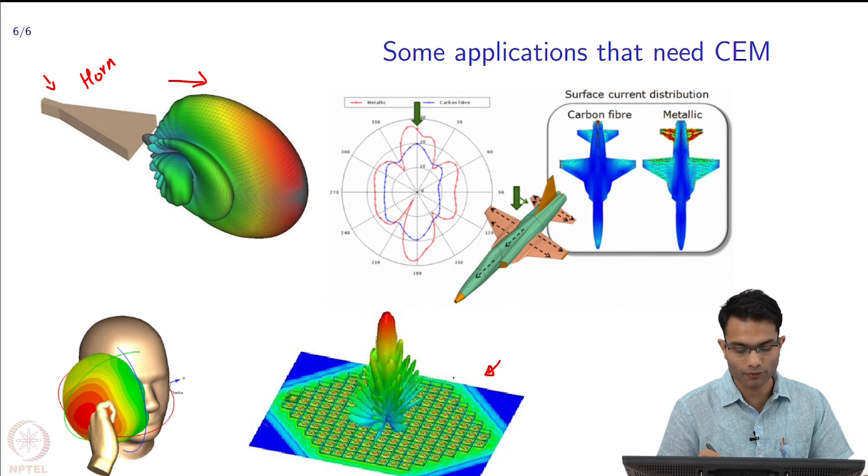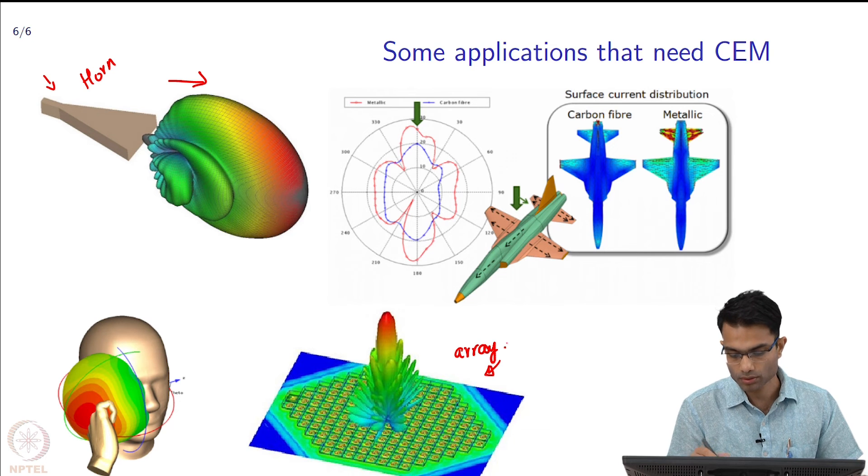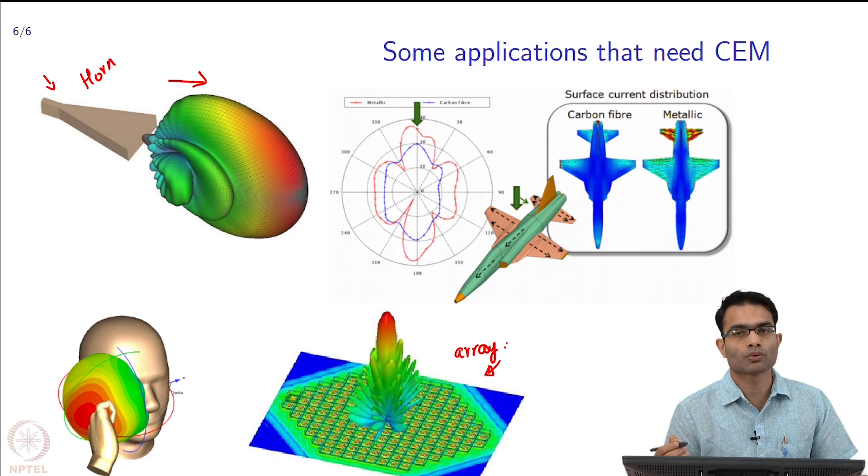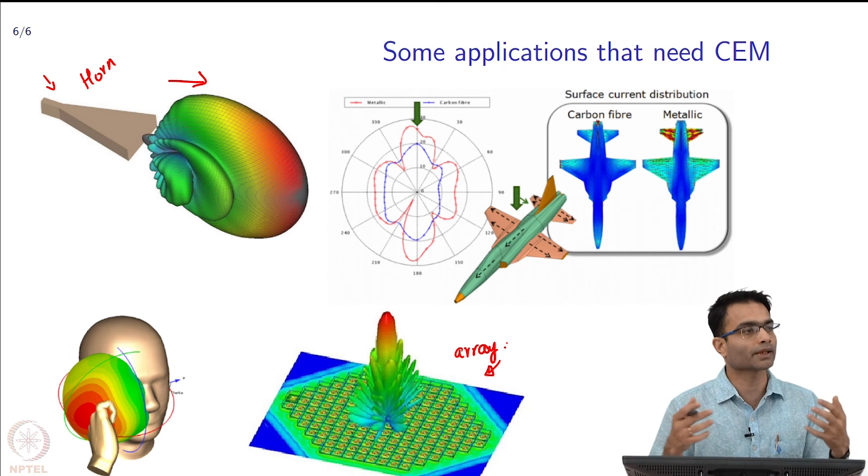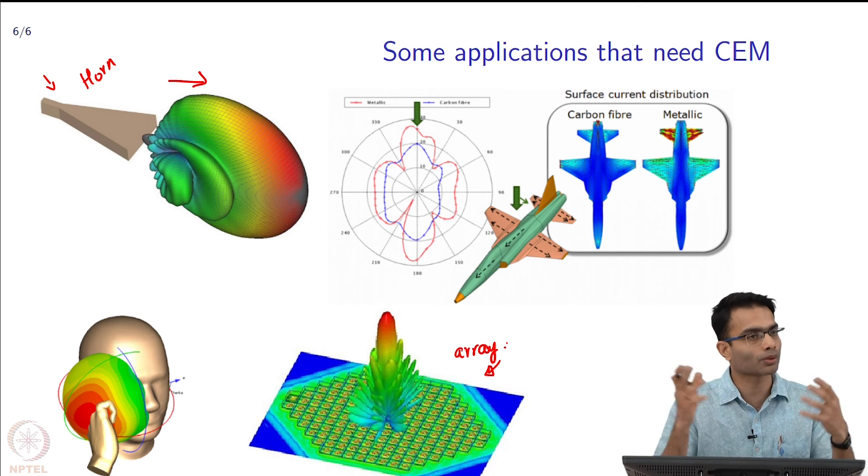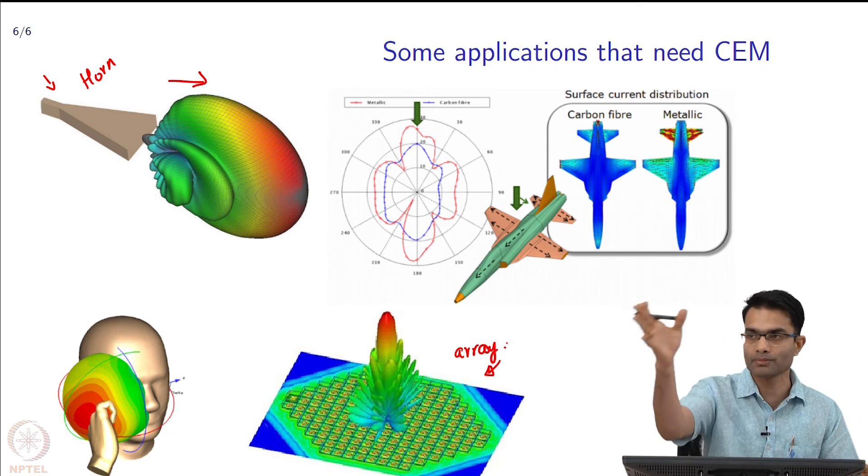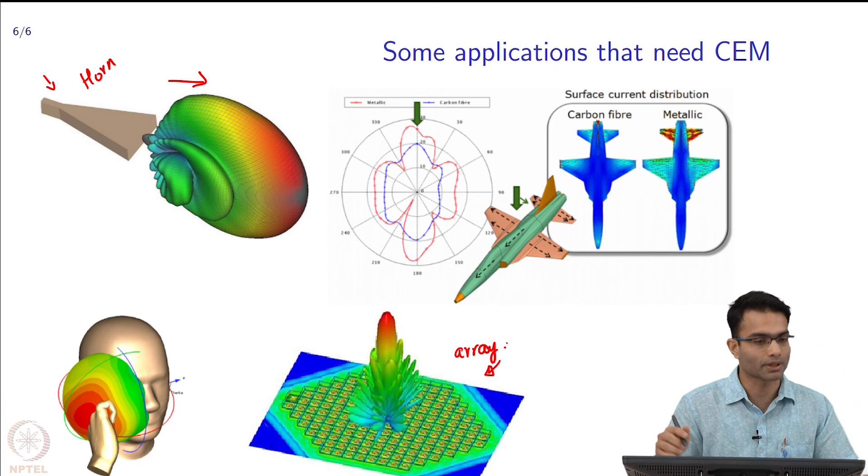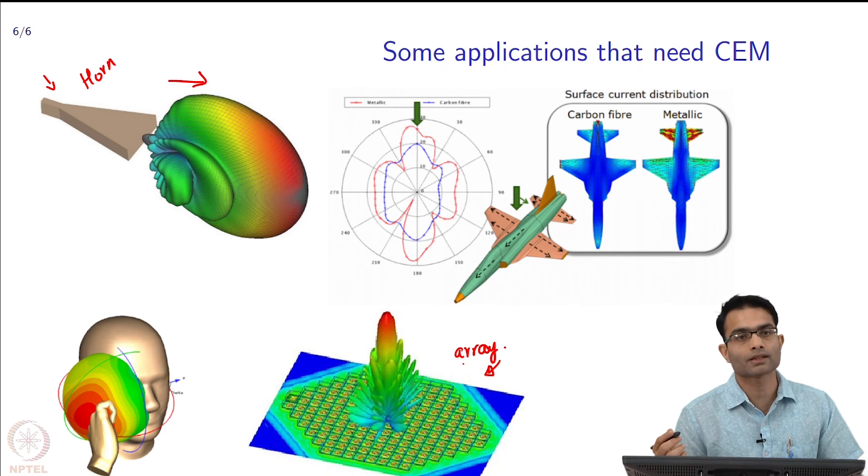Here is another interesting example which in technology these days is becoming very important. This is a collection of many antennas, it is called an antenna array. Any of you who are working or interested in 5G, people will be using antenna arrays instead of just a single antenna - there will be an array of antennas which will be used to do beam forming, MIMO and all of these things. How do you calculate the radiation pattern of an antenna array? You would use CEM techniques.